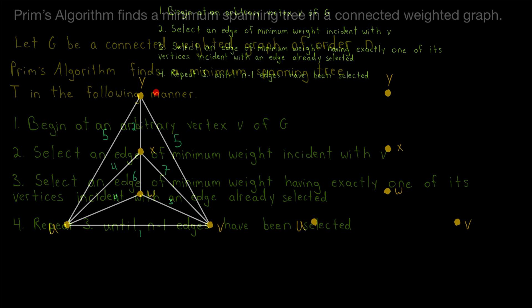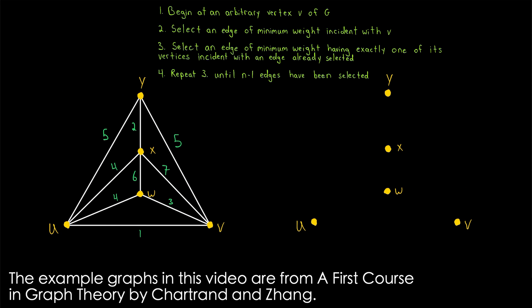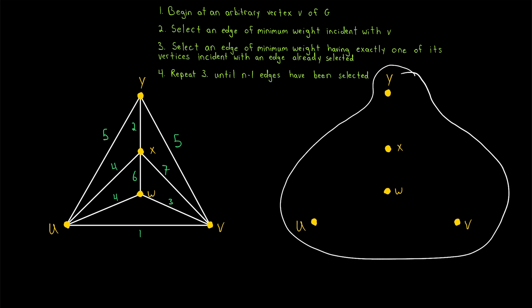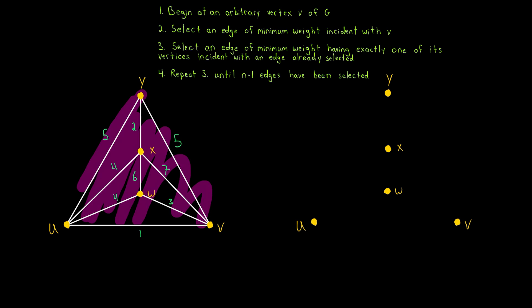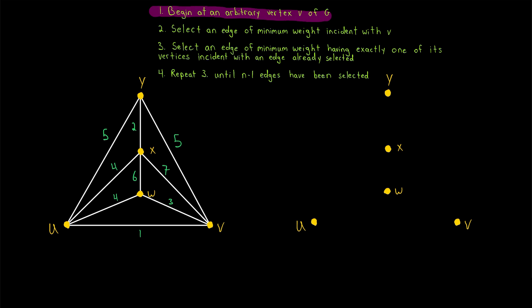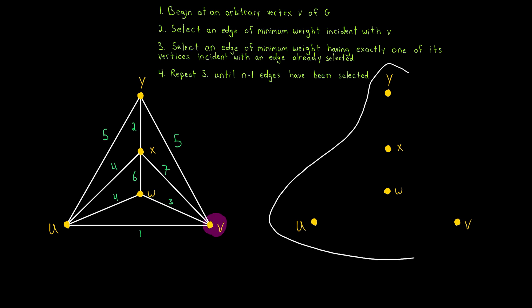Let's see it in action. Here's an example graph that we'll use Prim's algorithm on. Notice that it is both connected and weighted — each edge has an assigned weight in green next to the edge. I've pasted the steps of the algorithm here for our convenience, and I've got a copy of the vertices of our graph on the right. We'll carry out the algorithm on this graph, and on the right we can include the edges that our algorithm instructs. Step one is to begin at an arbitrary vertex V of G. We already have all the vertices of the graph in our spanning tree — by definition the spanning tree has to have every vertex. The algorithm is used to select edges that will minimize the total weight.